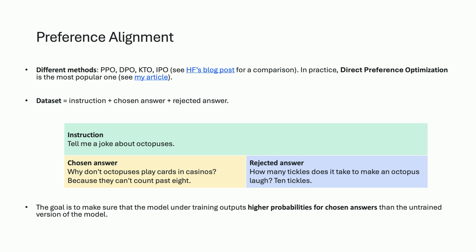Then you have preference alignment. There are a lot of different methods — PPO, DPO, KTO, IPO. In practice, direct preference optimization is probably the most popular one. You have a different format with an instruction, and you have a chosen answer and a rejected answer — a positive example and a negative example shown to the model. With DPO, the goal is to make sure that the model you're currently training outputs higher probabilities for the chosen answers than the untrained version of the same model. This can be used to either censor the model — for example, 'how to make a bomb' gets the chosen answer 'as an AI system I cannot tell you that' — or to boost the performance of the model in general.